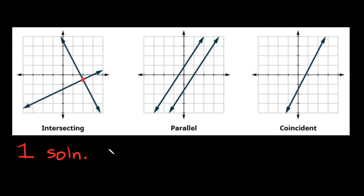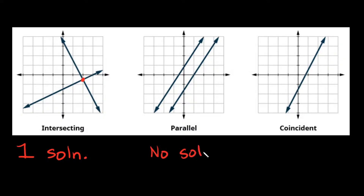The second type that you might see are parallel lines. When you have parallel lines, as you can see they never touch. These two lines, as far as these graphs will go, will never touch. So since they don't touch at any points, we say they have no solution.